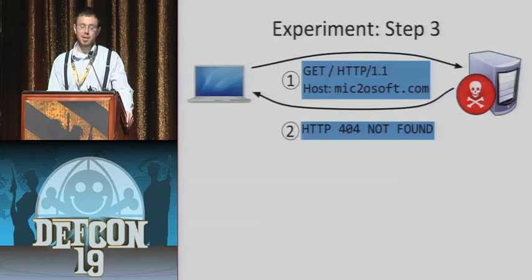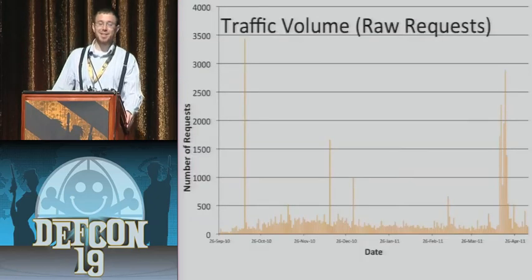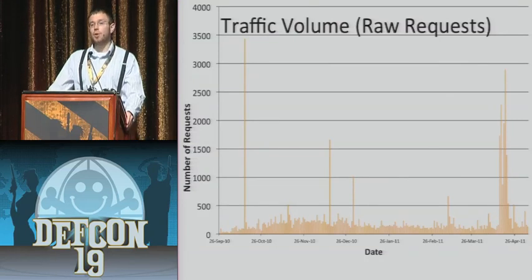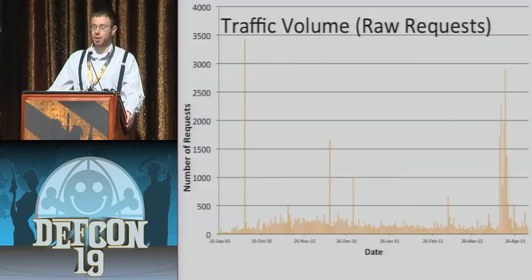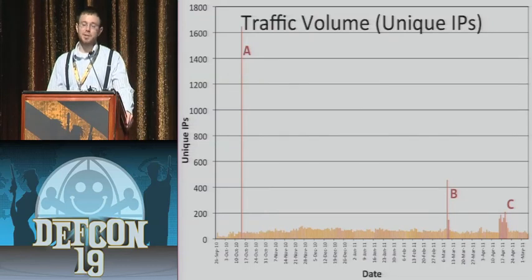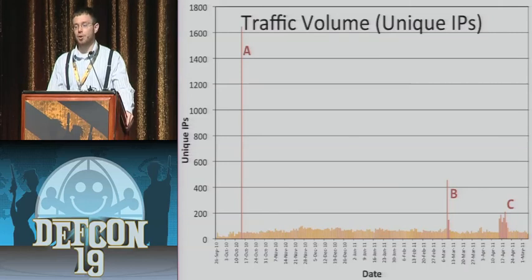The first thing that really surprised me is that people actually show up. This is the traffic volume of raw HTTP requests for a six-month period from the end of September to the beginning of May. There is a steady background stream of requests, punctuated by several extreme spikes — the biggest was approximately 3,500 HTTP requests per day. Here instead is the traffic volume by unique IP address per day. Aside from the steady stream of background noise, there are three major events labeled A, B, and C, each caused by bitsquatting.